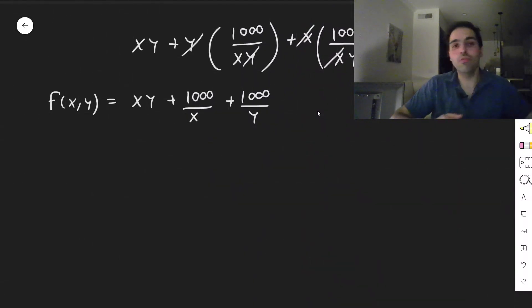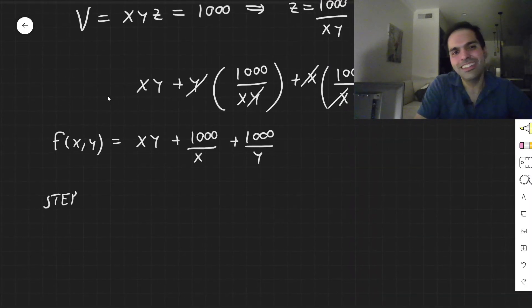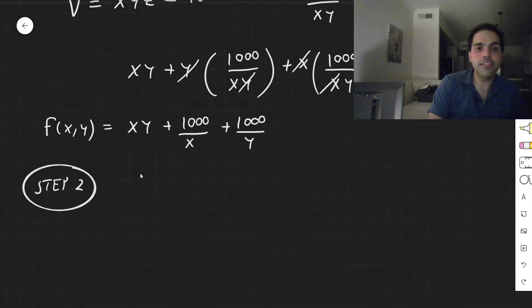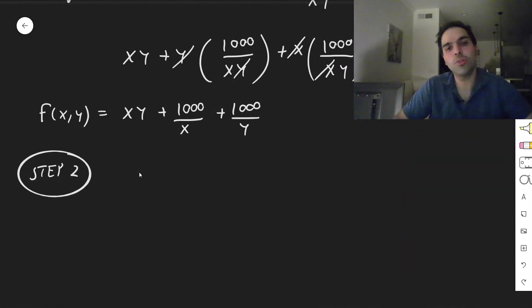All right. And then our goal is to minimize this. So step two, what we want to do, we want to minimize this. And for this, just like in single variable calculus, where you had f prime equals zero, now we want to find a critical point, which now, instead of f prime, we set fx equals zero and fy equals zero.